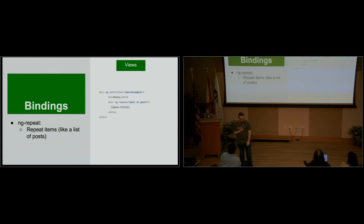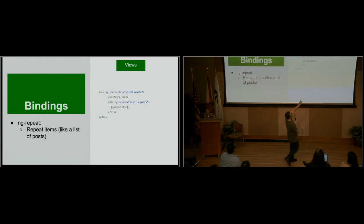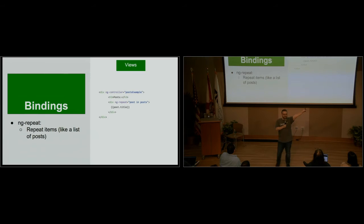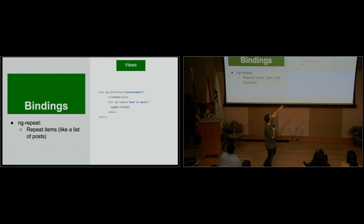I want to talk about ng-repeat. This is one more binding. We're all used to for-in or, for PHP developers, foreach loops. The syntax is the other way around: ng-repeat, post in posts. If you're a PHP developer you have to mentally flip those around, but it's exactly the same thing. As long as we have posts, loop through them as 'post' — grab the first key of the array, call it post, render it, grab the next one, render it. So we have posts in our scope and we're able to loop through those and do post.title.